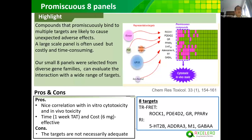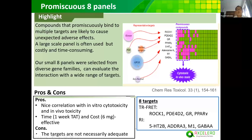The promiscuous 8-panel is based on the confirmed finding that promiscuity — binding to multiple targets — is likely to cause unexpected adverse effects. A large-scale panel of 40 to 100 targets is often used, but it is costly and time-consuming at an early stage. Our small 8-panel was selected from diverse gene families: from kinase, from nuclear receptor glucocorticoid and PPAR-gamma, from GPCR serotonin-2B, adenosine-A3, and so on. This small panel can evaluate interaction with a wide range of targets. If a compound interacts with two or more targets, it indicates the compound would cause some toxicity in an in vivo study.